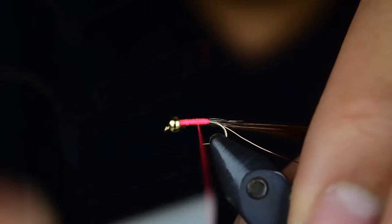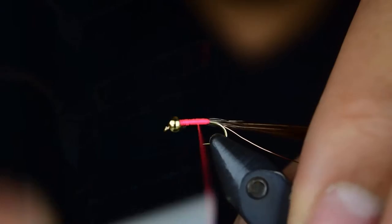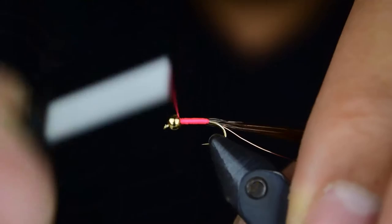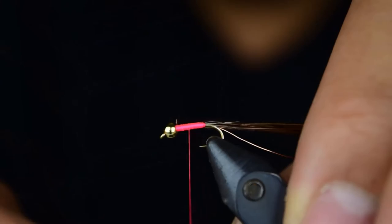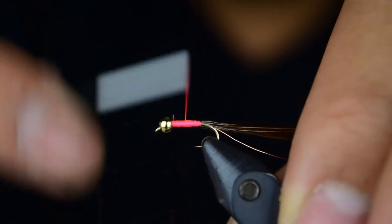To right there, and we'll come back forward. Like I said, we want to build up a little bit of a taper so we get a nice carrot shape. So we'll wrap to behind the bead and we'll wrap back a little bit, right about there, and we'll wrap forward again. That'll give us the taper we're looking for.